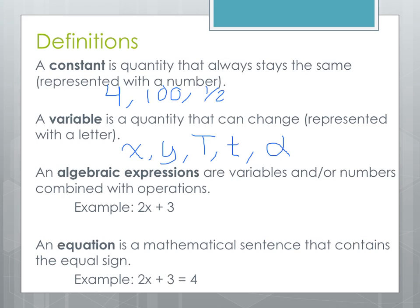An algebraic expression is variables or numbers combined with operations. Here we have an example of an expression: 2X plus 3. What operations are going on here? We've got an addition operation, and 2X is another form of implied multiplication — this is 2 times X. So we have constant terms here with the 3, and variables here with the 2X.